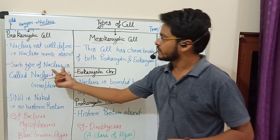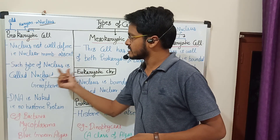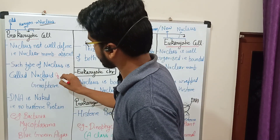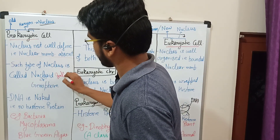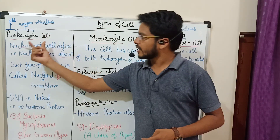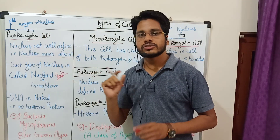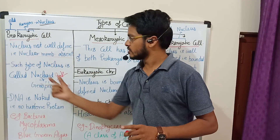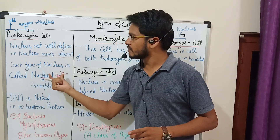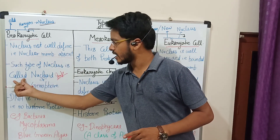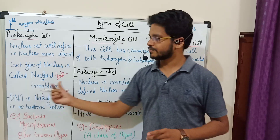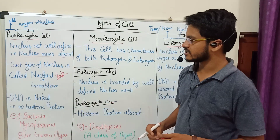Because prokaryotic cells have no well-defined nucleus, such a type of nucleus is called a nucleoid or genophore. This is a very important term — nucleoid or genophore.